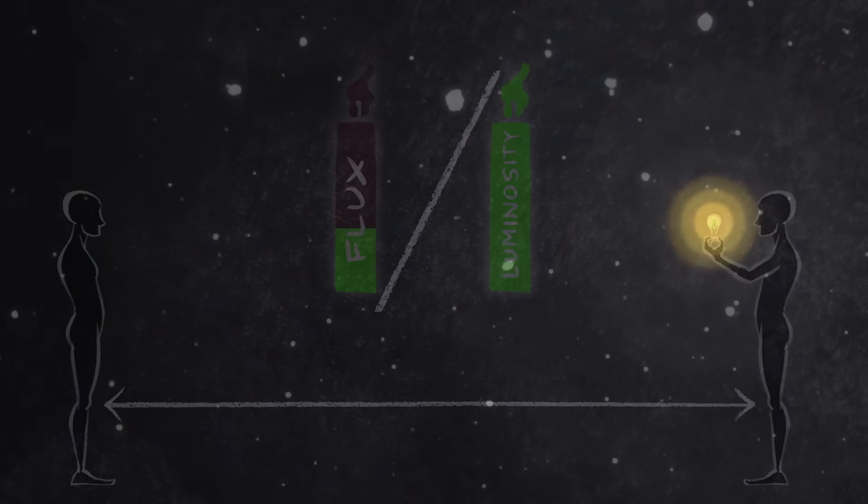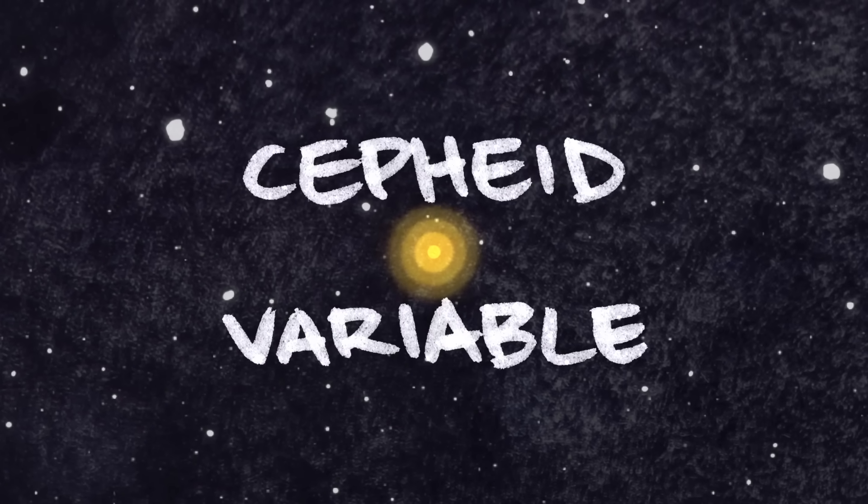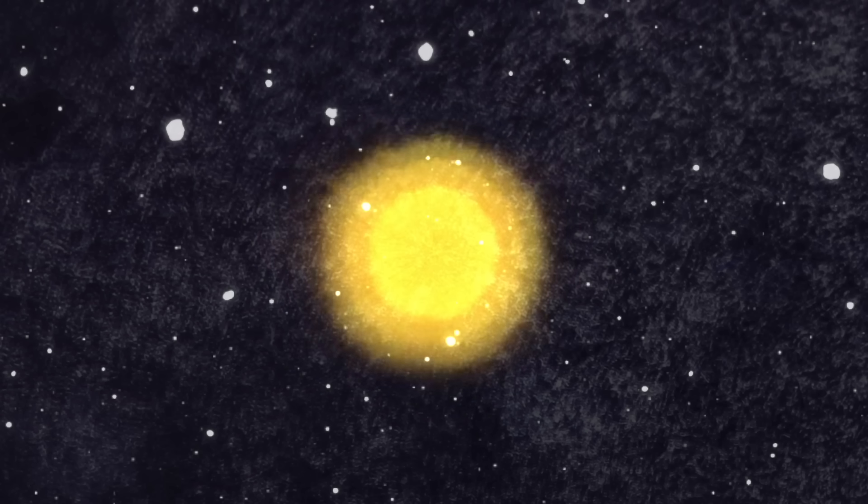In astronomy, our light bulb turns out to be a special type of star called a Cepheid variable. These stars are internally unstable, like a constantly inflating and deflating balloon.